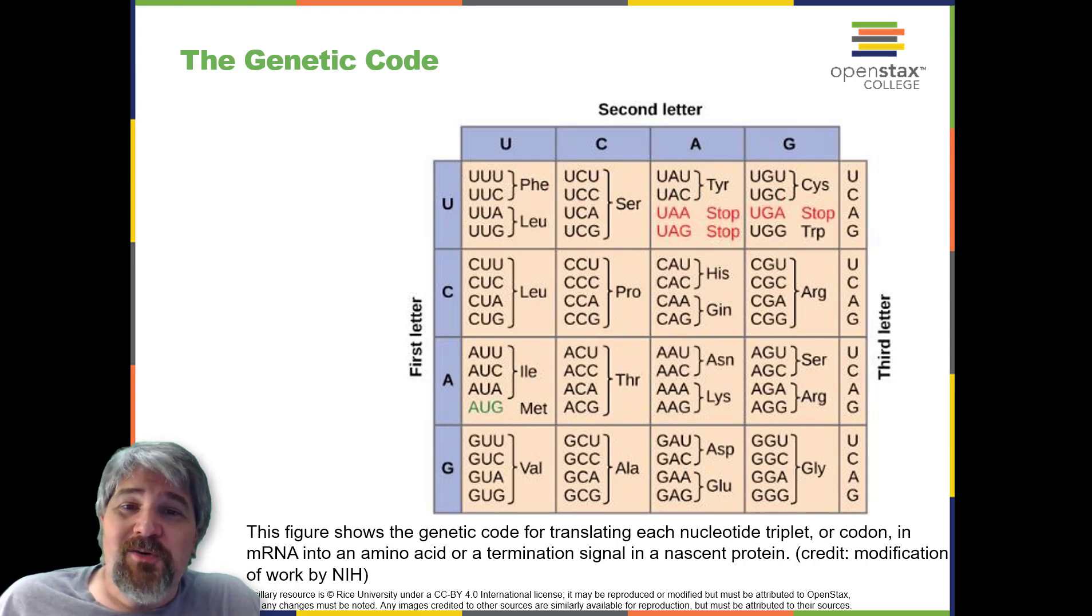Therefore, a given amino acid is encoded by more than one nucleotide triplet, which you can see here. So the fact that there are multiple codons that code for the same amino acid is also referred to as degeneracy.